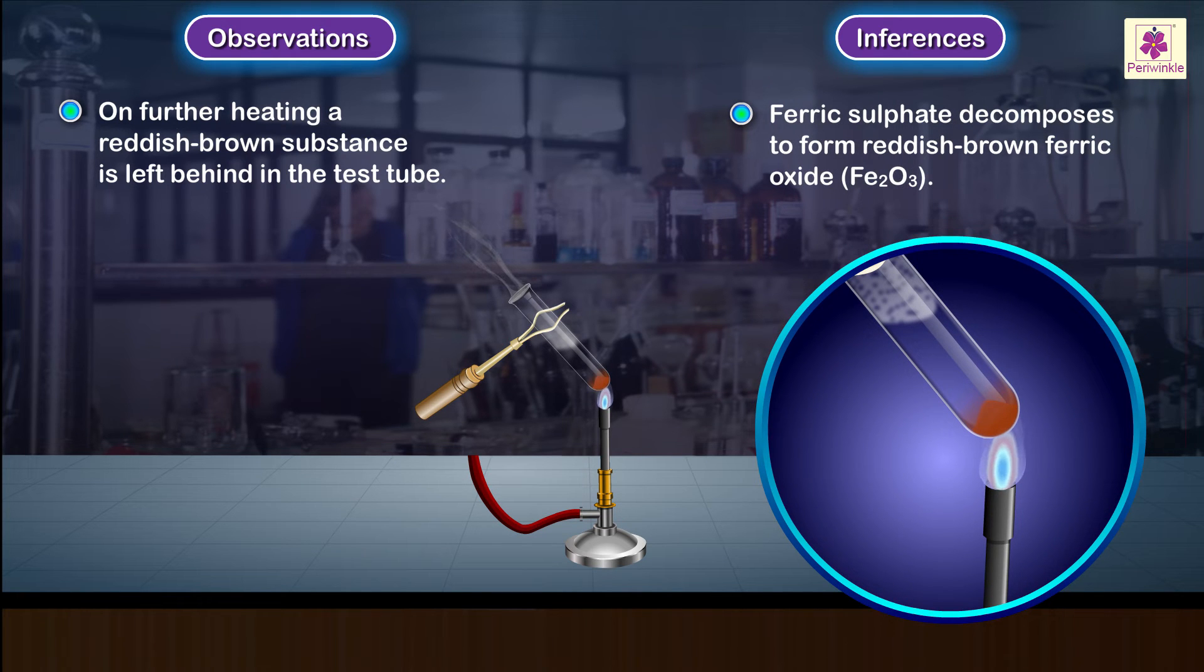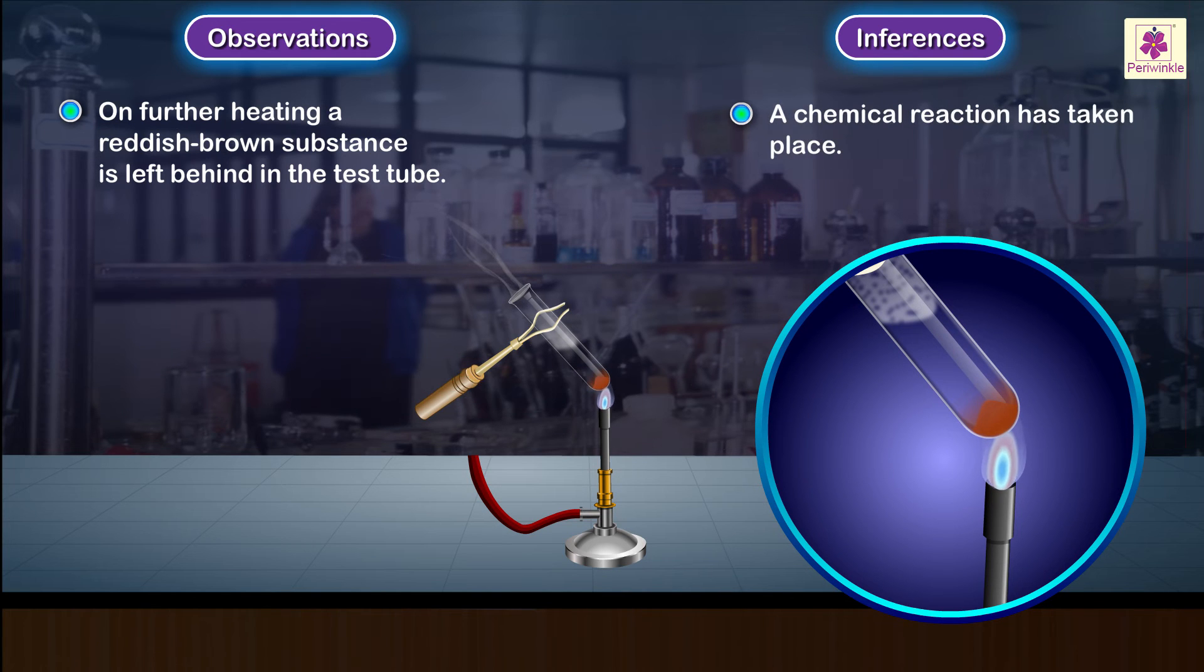Ferric sulfate decomposes to form reddish-brown ferric oxide (Fe₂O₃). A chemical reaction has taken place.